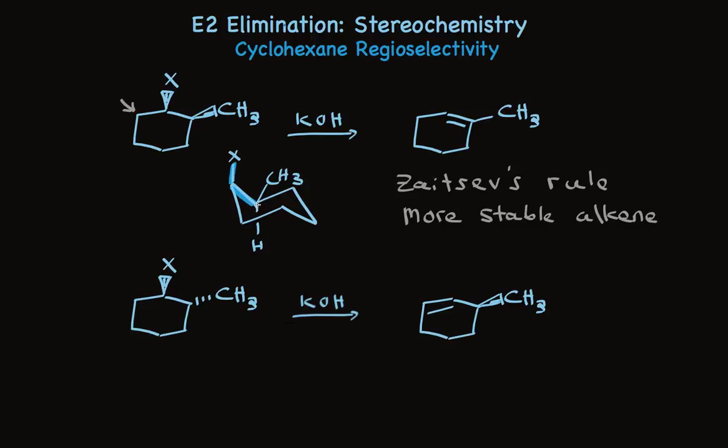So the stereochemistry of this structure permits the anti-coplanar arrangement to form the more stable alkene. But that's not the case when we have the other stereoisomer.